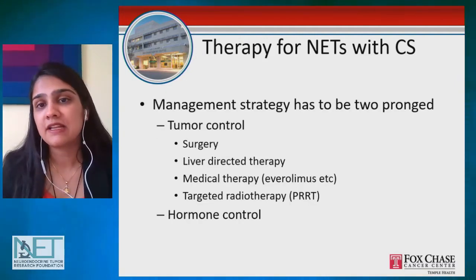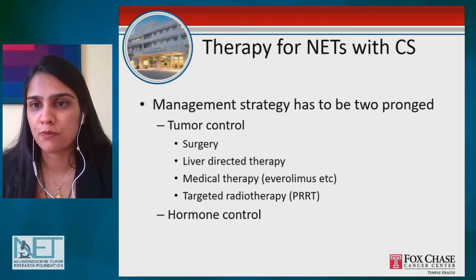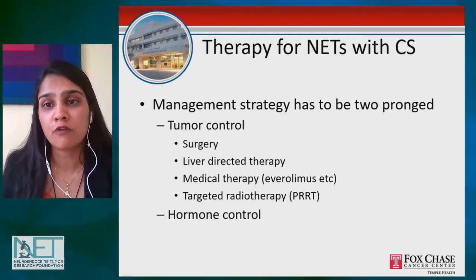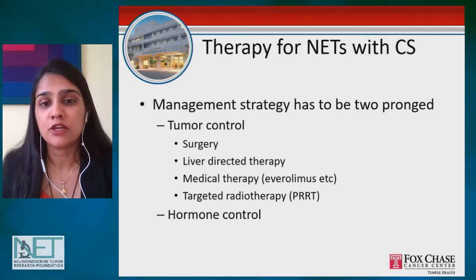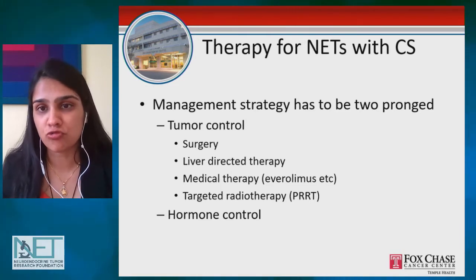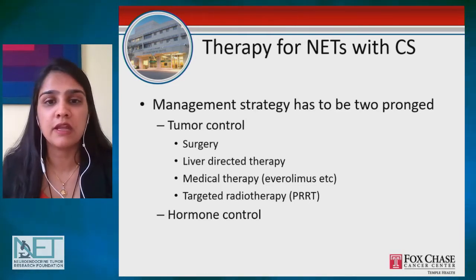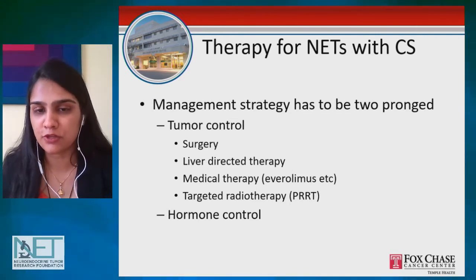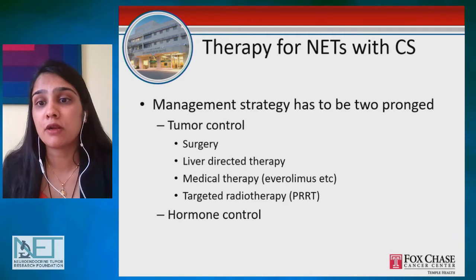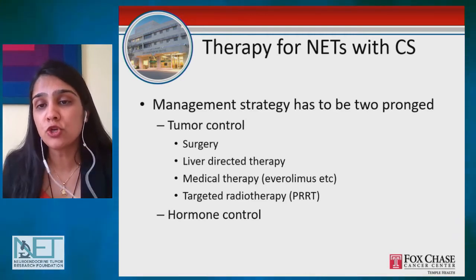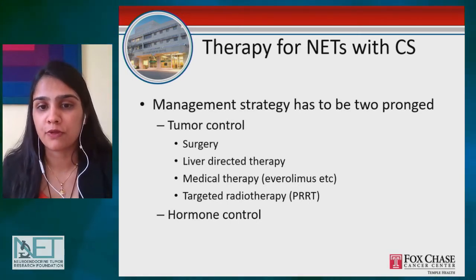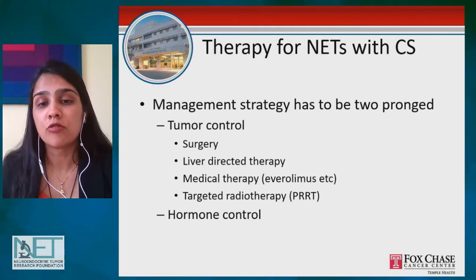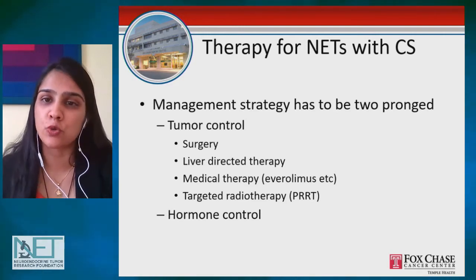Let's talk about how we treat carcinoid syndrome. Treatment is intertwined with treating the underlying problem. If someone has a neuroendocrine tumor and you treat the cancer through surgery, liver-directed therapy, medical drug treatments, or targeted radiotherapy, controlling the tumor will improve the symptoms. Beyond that, we look at hormone control — targeting reduction of the hormone or its effect — which is a treatment specific to patients who have carcinoid syndrome.